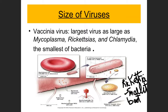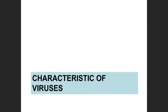Once you get this small with such limited genetic material, there isn't enough room to have all the genes needed for independent life, so you end up having to be a parasite — just like viruses. Mycoplasma, Rickettsia, and Chlamydia are the smallest bacteria.